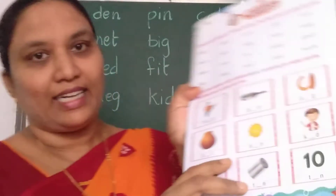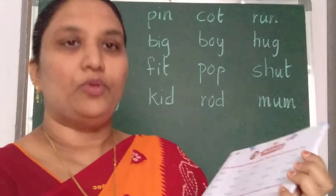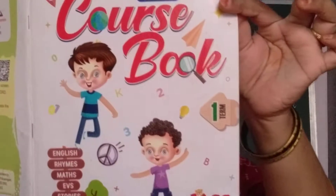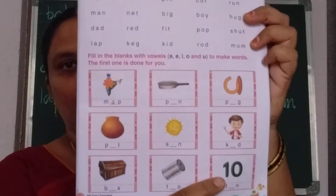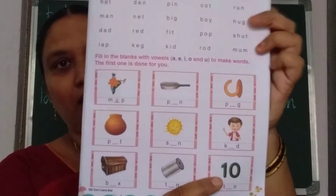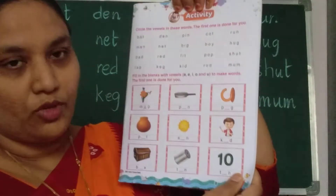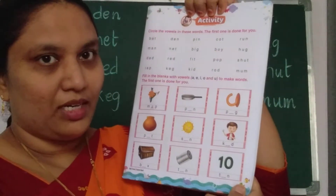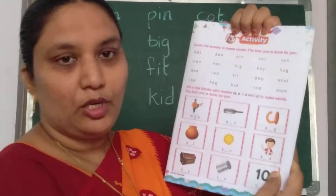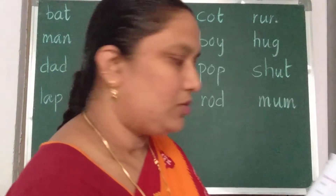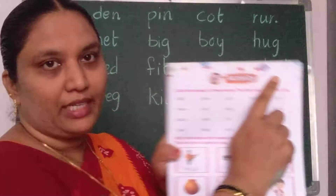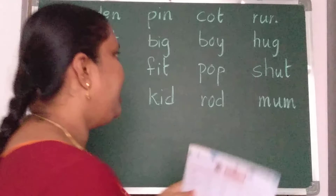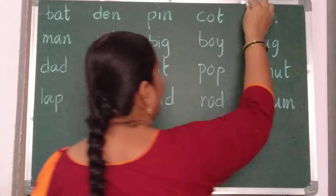These activities are there in your course book. This is your course book. In that, page number 9. Today, in the course book, page number 9 we will do. Okay children, ready? Here you should write the date. Today is the 21st.